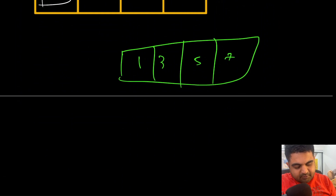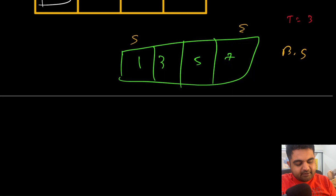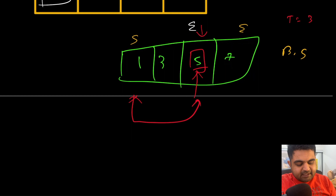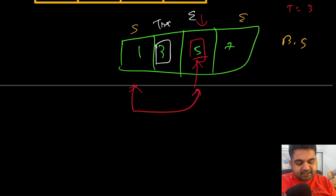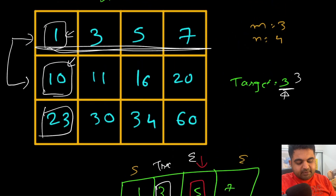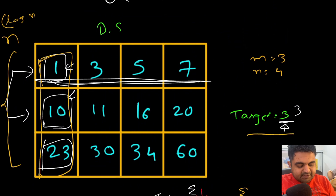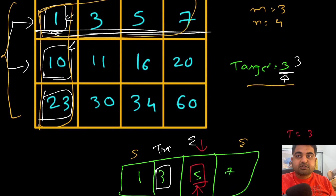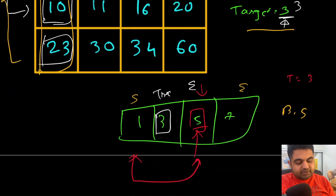Now we only have one row to worry about, so we solve this using a simple binary search with a starting pointer and ending pointer. The target value is 3. We find the middle pointer, which is 5. The target is less than the mid, so the target must reside to the left. We update the end pointer and repeat the binary search, finding the mid pointer, and return true. The time complexity for this is O(log n) for the row search, but we are doing an intermediary step. Let's see if there's a more optimal solution.